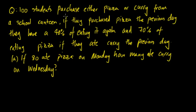So looking at the question, 100 students purchase either pizza or curry from a school canteen. If they purchased pizza the previous day they have a 40% chance of eating it again and 70% chance of eating pizza if they ate curry the previous day. So if 80 ate pizza on Monday, how many ate curry on Wednesday?